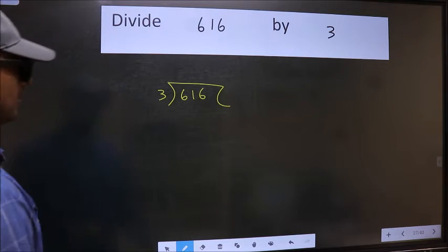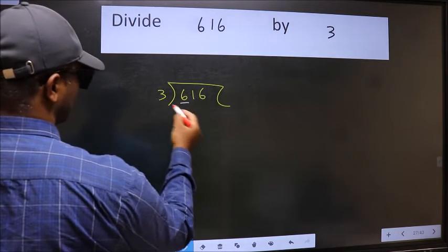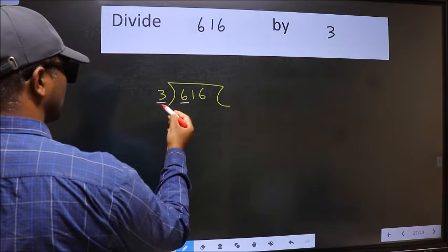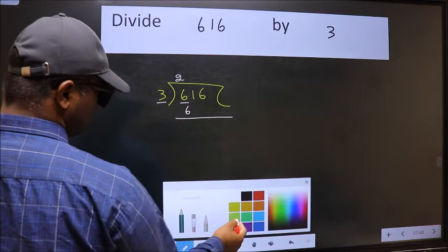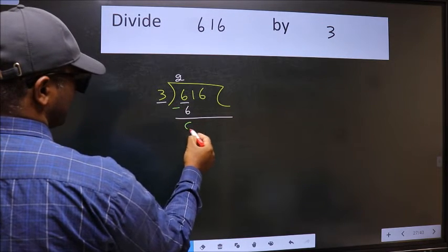Next. Here we have 6 and here 3. When do we get 6 in the 3 table? 3 times 2 is 6. Now we should subtract. We get 0.